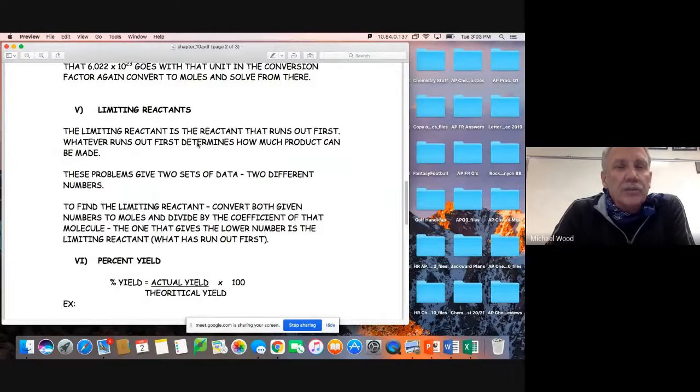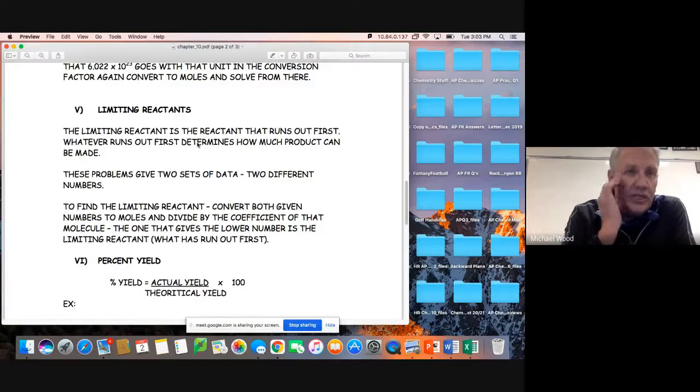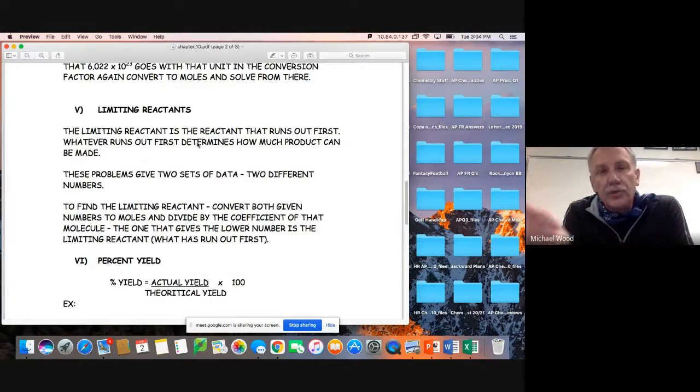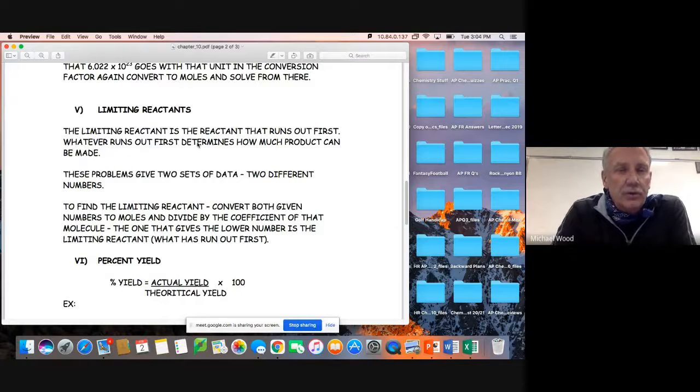So limiting reactants - the limiting reactant is the reactant that runs out first. Whatever runs out first determines how much product that can be made. These problems are always going to give you two sets of data, two different numbers. To find the limiting reactant, instead of converting both to moles and divide by the coefficient, I would convert both to the product and compare, and the one that gives the lower number is the limiting reactant.